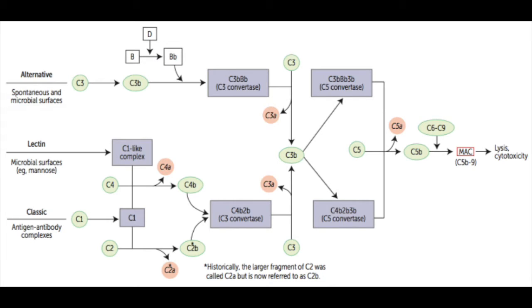We get 4b and 2b coming together, then cleaving C3. Then we get 4b, 2b, 3b heterotrimer, cleaving C5. We get 5b sticking in the membrane, recruiting 6, 7, 8 and then a ring of 9 forming the membrane attack complex. So exactly the same. The only difference is how they start.